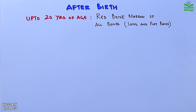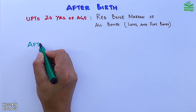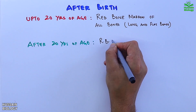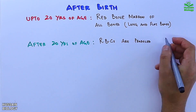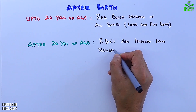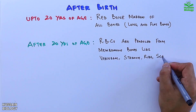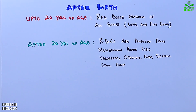Then we have the second phase, starting after 20 years of age, where RBCs are produced from the membranous bones like vertebrae, sternum, ribs, scapula, skull bones, and pelvis, as well as other bones.